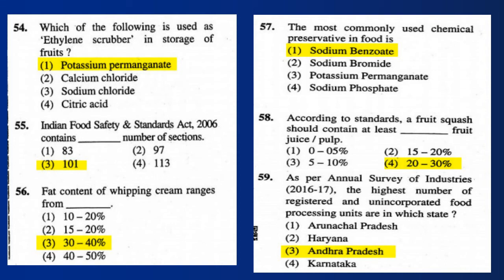Question 59: As per the Annual Survey of Industries 2016-17, the highest number of registered and unincorporated food processing units are in which state? Answer: Andhra Pradesh.